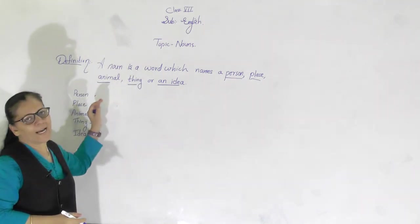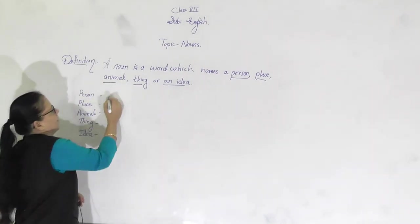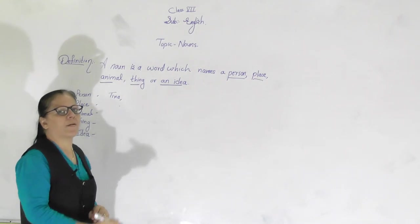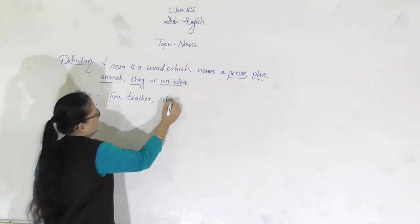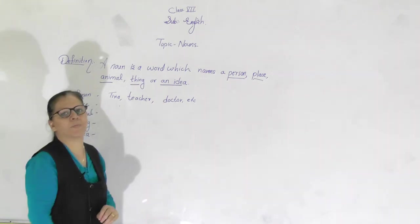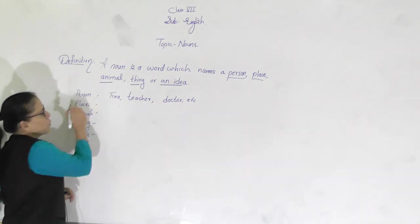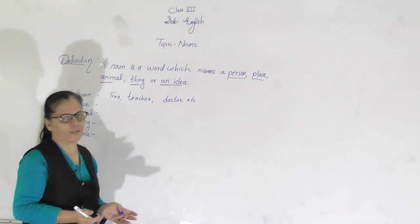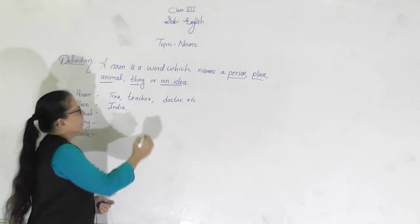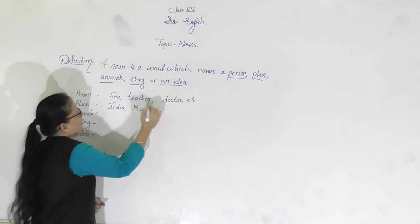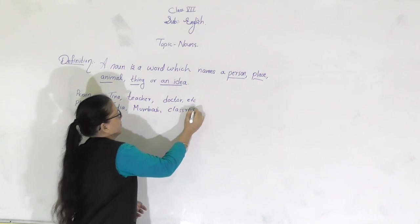Now let us see the examples one by one. For a person, for example, Tina, or we may say teacher, doctor, etc. These are the names of a person and hence they are called nouns. It can also name a place — the name of any country like India, or any city like Mumbai, or any small place like classroom.